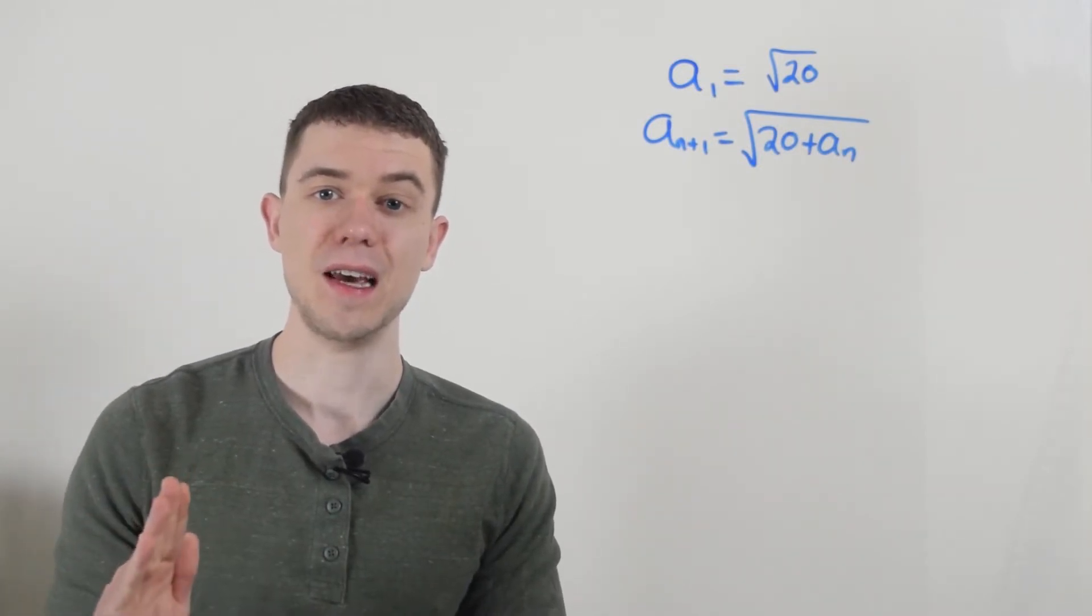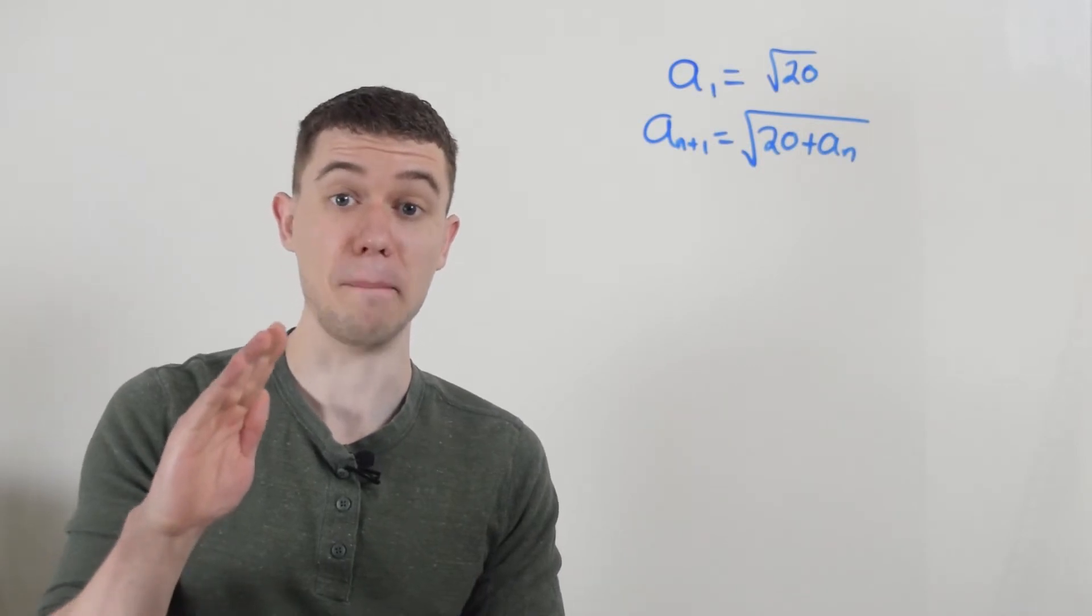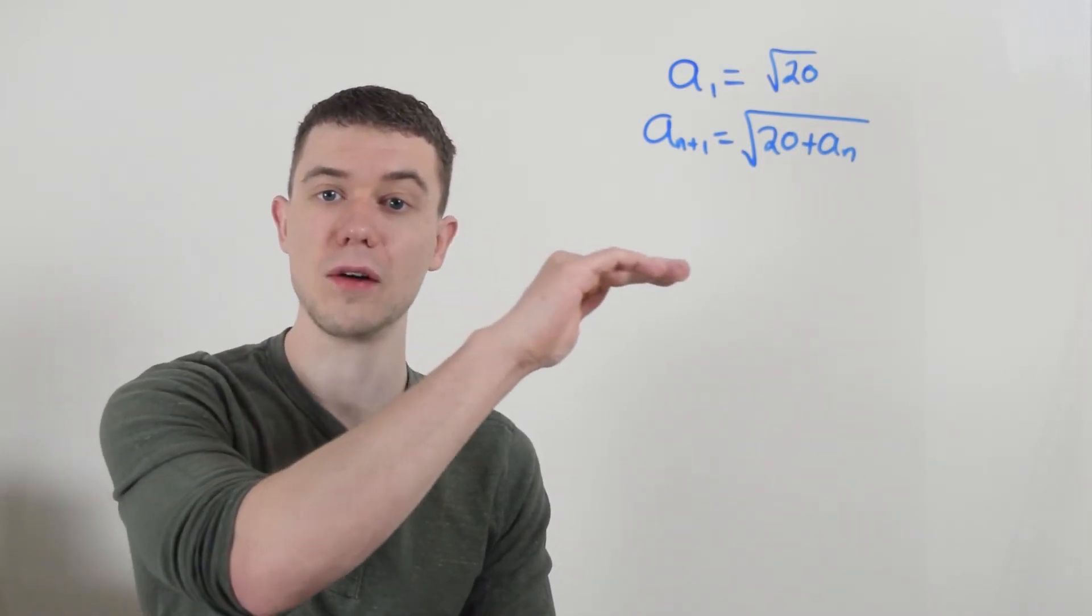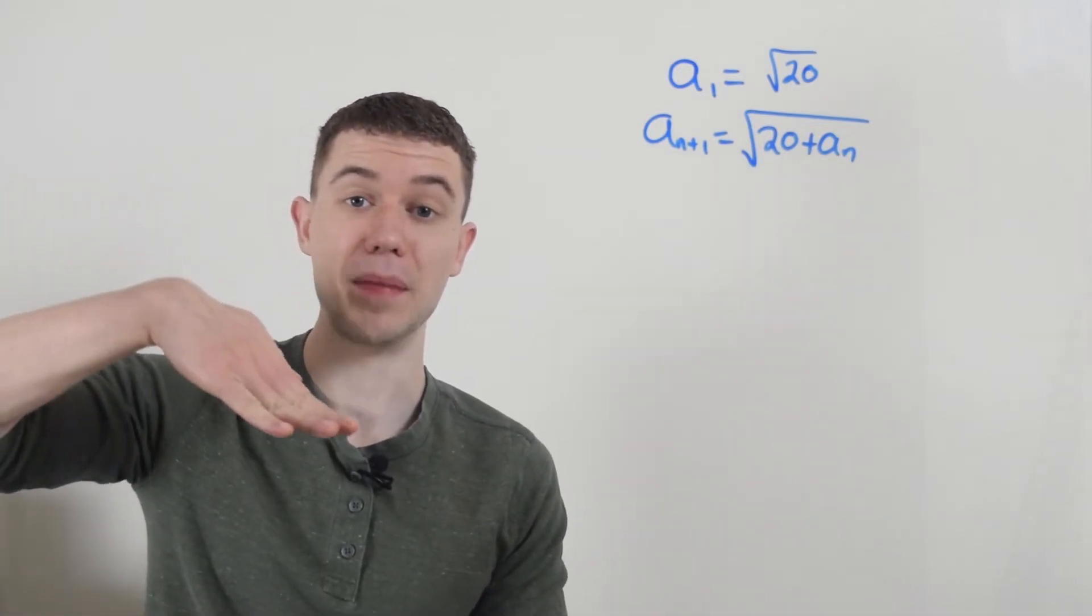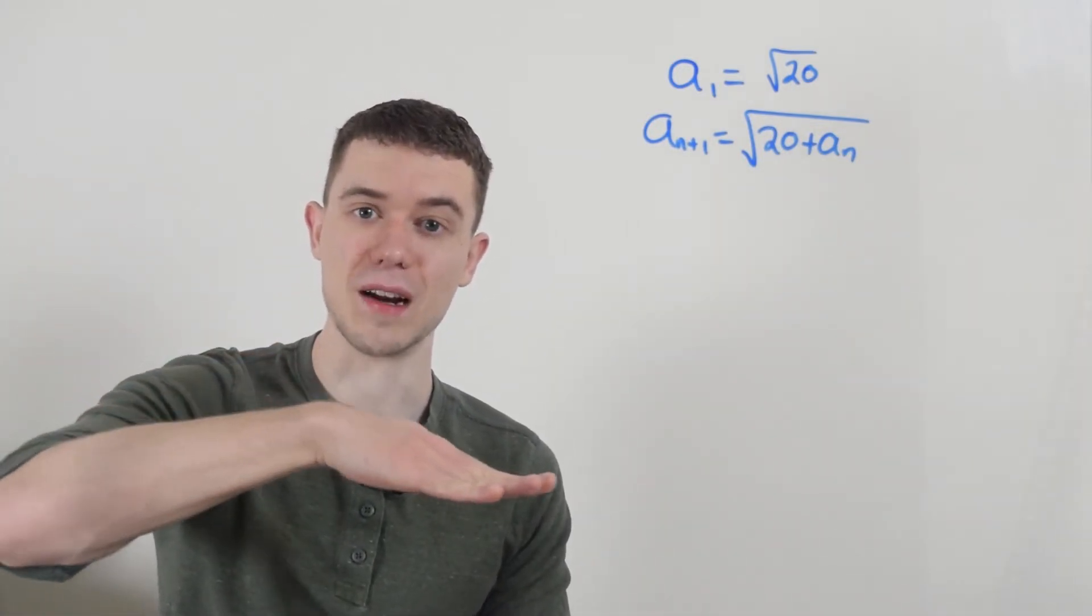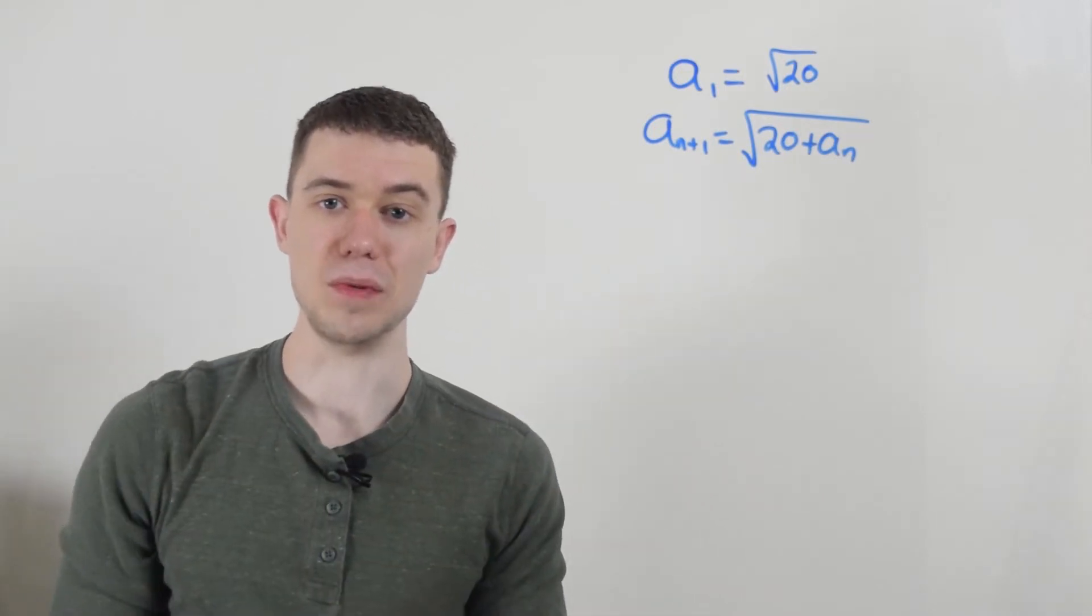So think of it like this, if I'm always increasing, but I'm bounded above, I have to eventually kind of level off somewhere. And that'll be my limit. If I'm always decreasing, but I'm bounded below, again, I'll always kind of level off somewhere, and that will be my limit.